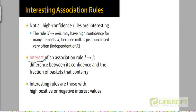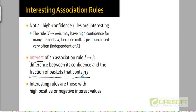So how do we distinguish those association rules where the purchase of the item on the right hand side is connected to the purchase of items on the left hand side, from those rules where the confidence measure may not reflect any causal correlation? Let's define another metric called the interest of an association rule. The interest of an association rule i to j is the difference between its confidence and the general probability that the basket contains the item on the right hand side.